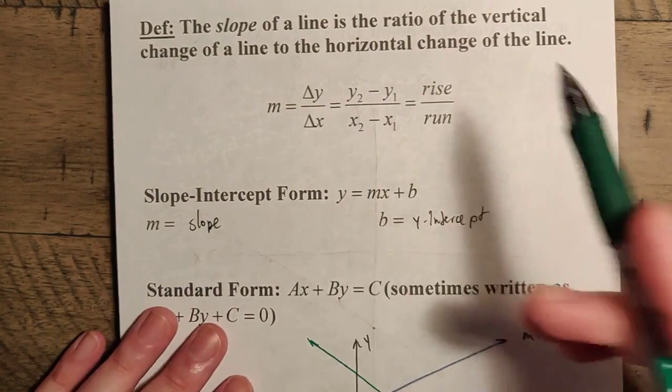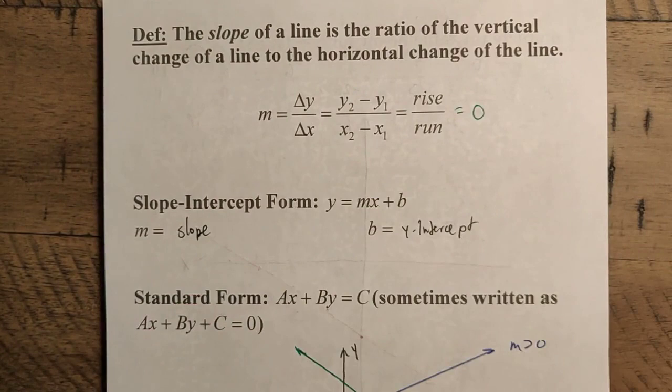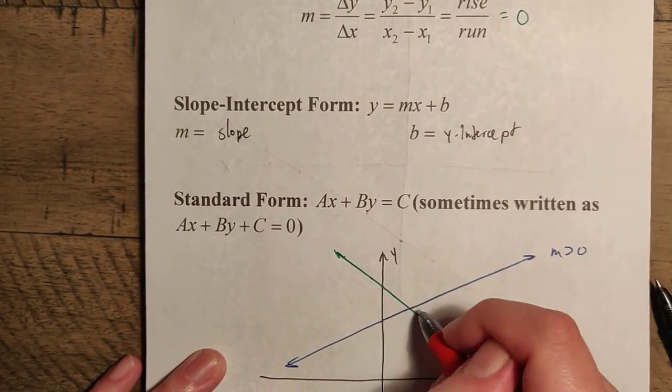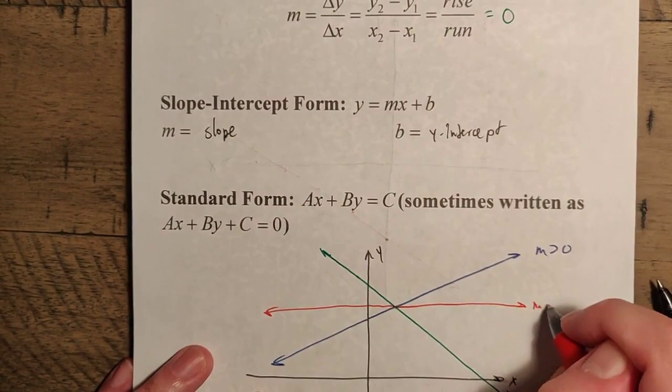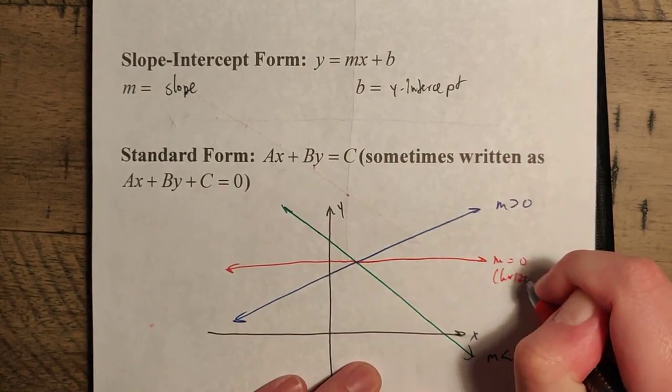Now, if M is equal to zero, if we have equal to zero here, that means if this is equal to zero, the only way for that to occur is if delta y is zero. That means the rise doesn't change. The line doesn't rise at all while the line runs. So M equals zero really just means a horizontal line, something like this. So here, something like this, we can sketch this line like so. Here, M equals zero, because there's no rise. This line is completely horizontal.